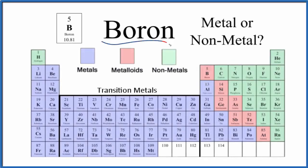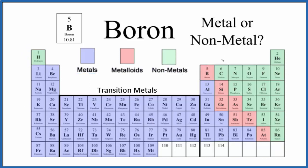In this video we'll look at whether boron is a metal, nonmetal, or metalloid. We have the periodic table here, and the trend is that on the left we have metals — most of these on the left side are metals, with the exception of hydrogen, which is a nonmetal. You have to watch out for that. And then on the right we have our nonmetals, and in between we have what are called the metalloids, which have properties of both the metals and the nonmetals.